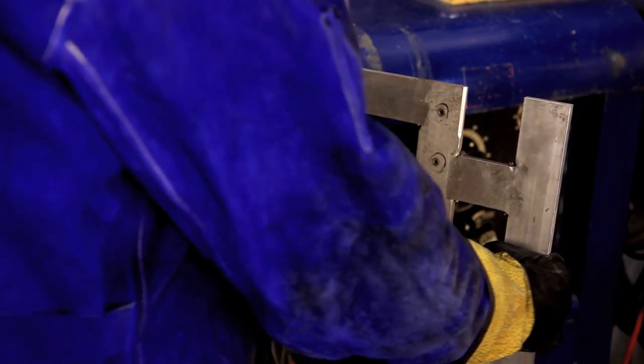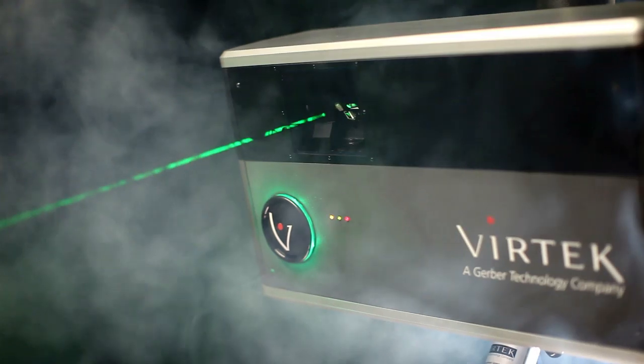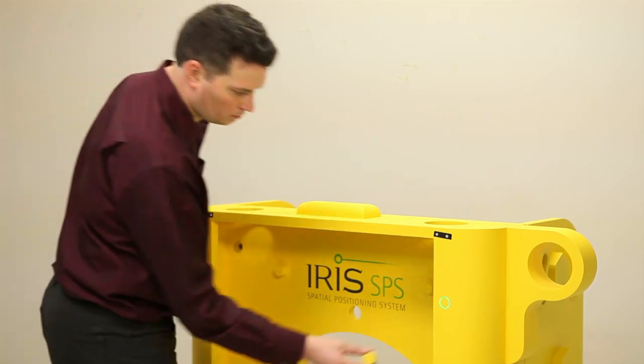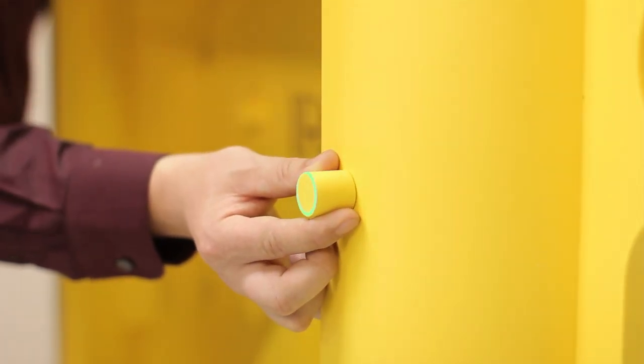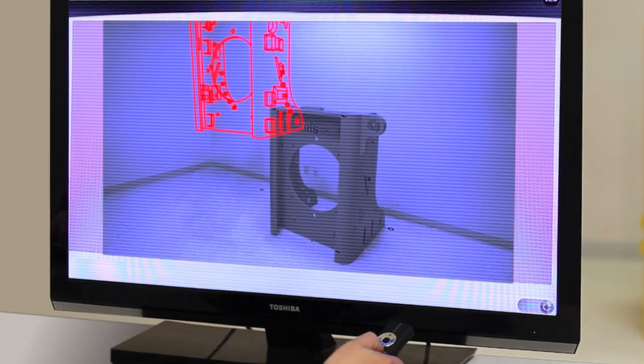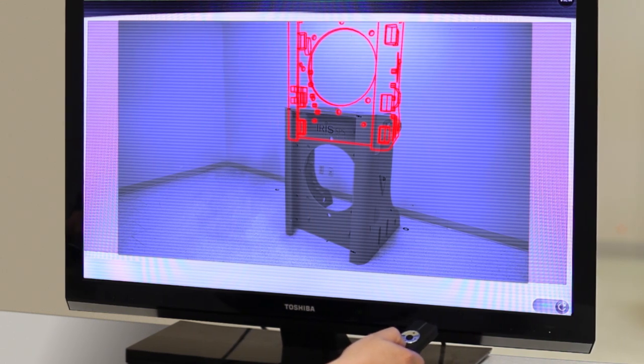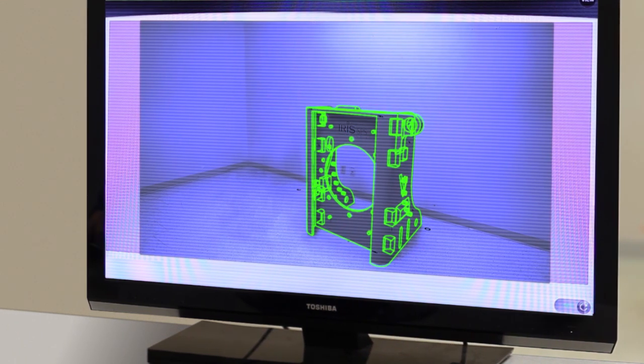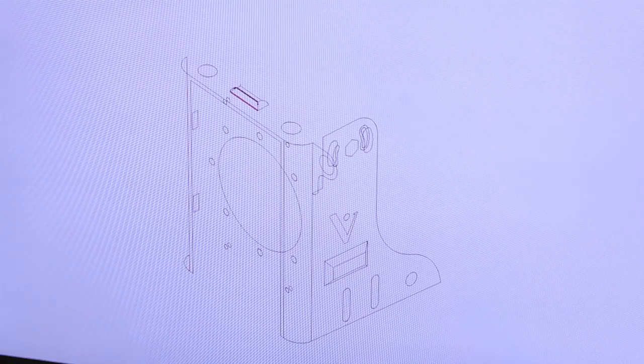Rather than using heavy templates or jigs for part assembly, IRIS uses laser patterns to guide the user through the assembly process. An intuitive interface enables the user to quickly lock the IRIS SPS onto part features, enabling it to precisely align to datums specified by the mechanical design team.